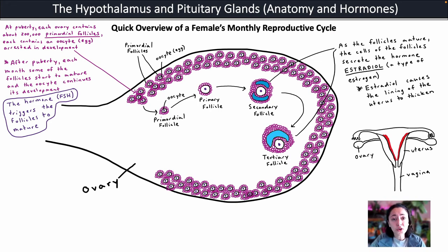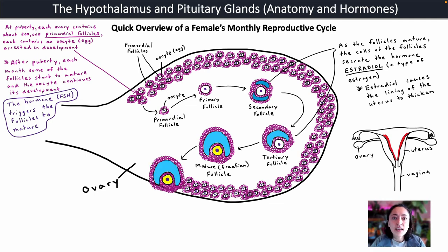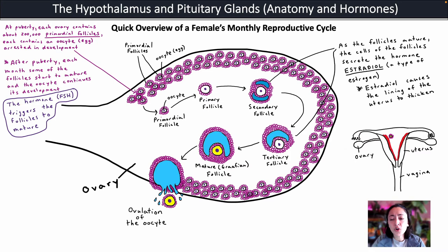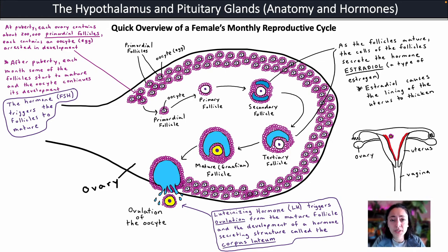The mature follicles continue maturing, and the final stage is known as a mature follicle or Graafian follicle. Each month, only one follicle becomes a Graafian follicle, and that Graafian follicle will then release the oocyte — this is called ovulation. During ovulation, the oocyte leaves the ovary, enters the fallopian tubes, and moves down toward the body of the uterus. What triggers ovulation from the mature Graafian follicle is luteinizing hormone, secreted by the anterior pituitary gland.